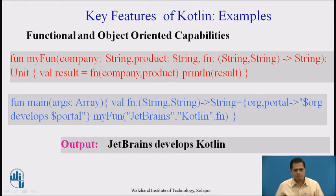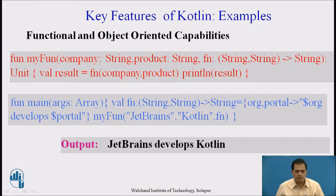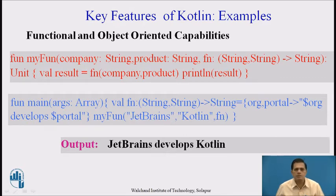For functional and object-oriented capabilities, a higher-order function accepts a function as a parameter or returns a function. In the example, 'fun myFun(company: String, product: String)' is declared. When we pass the parameters 'JetBrains' and 'Kotlin', it gives the output 'JetBrains develops Kotlin'.